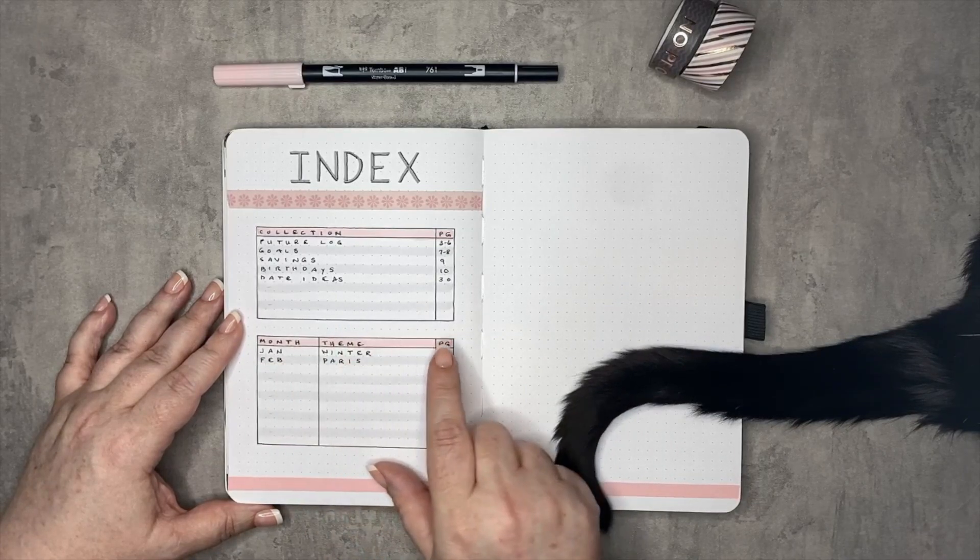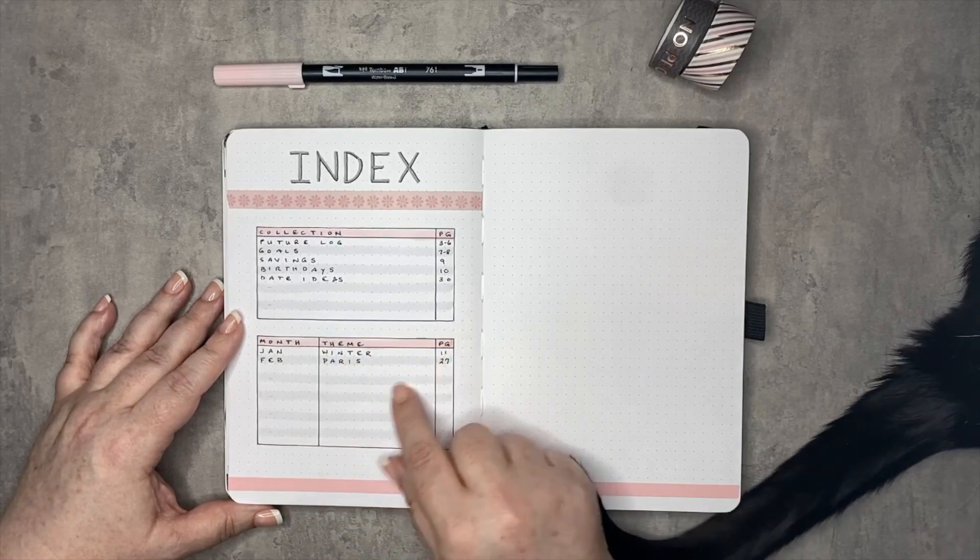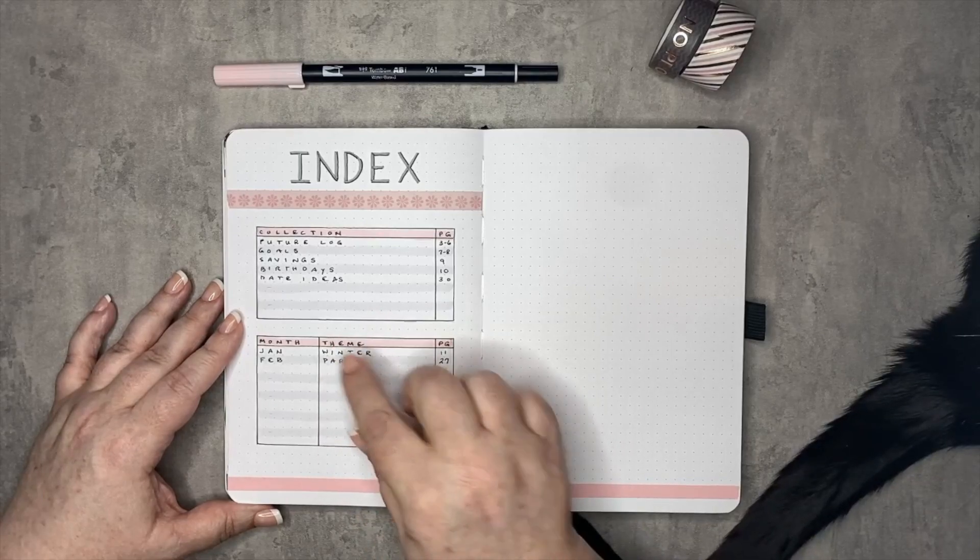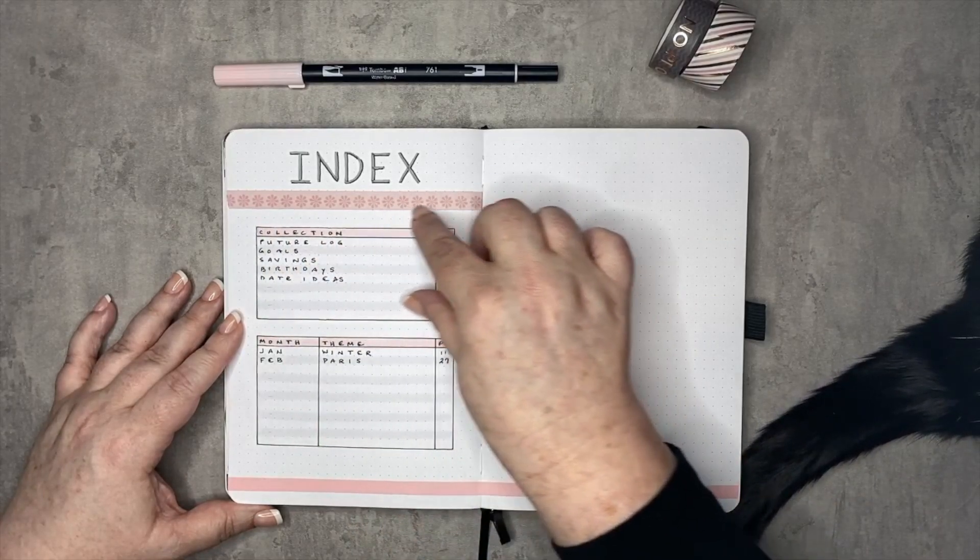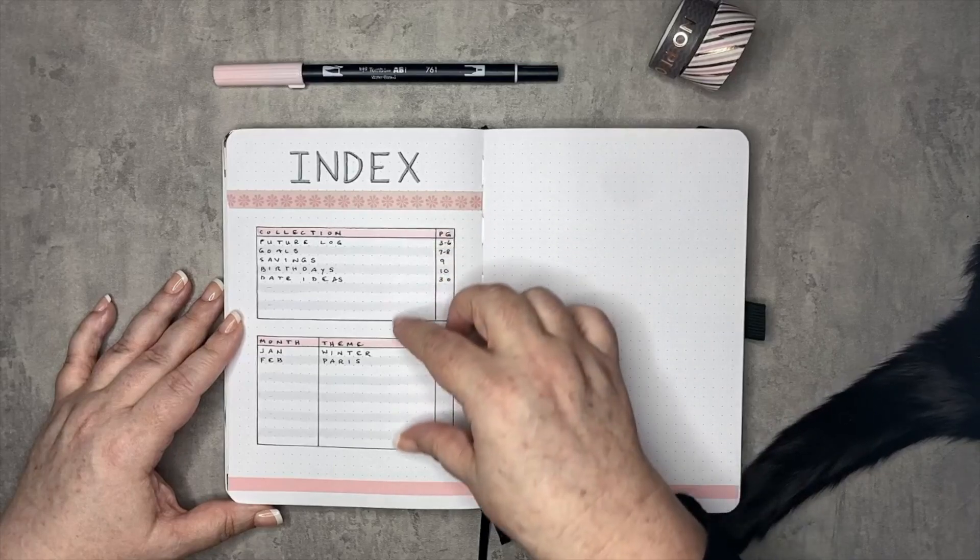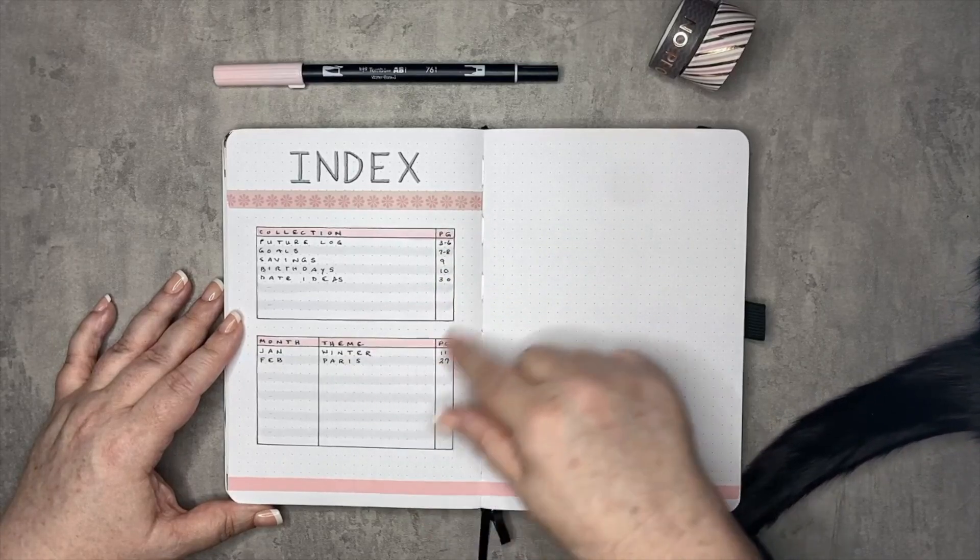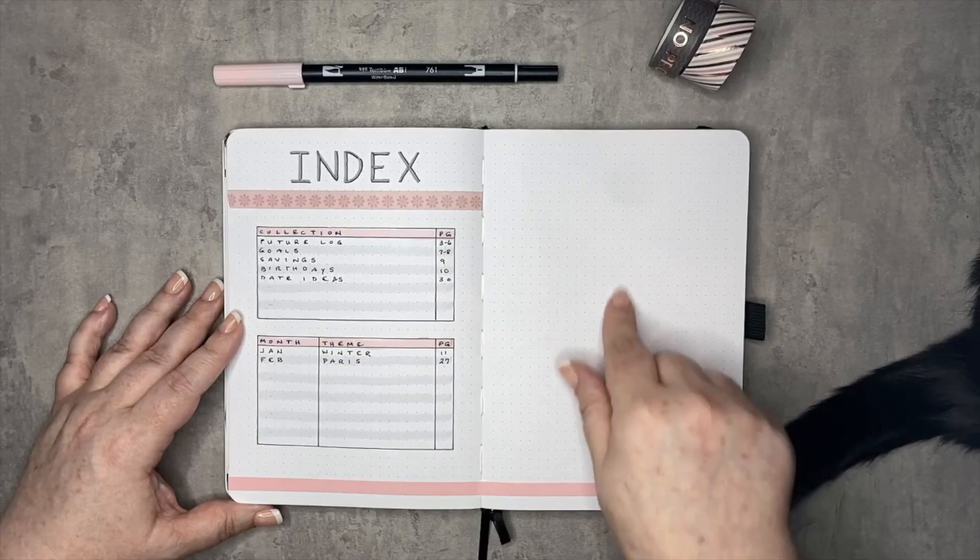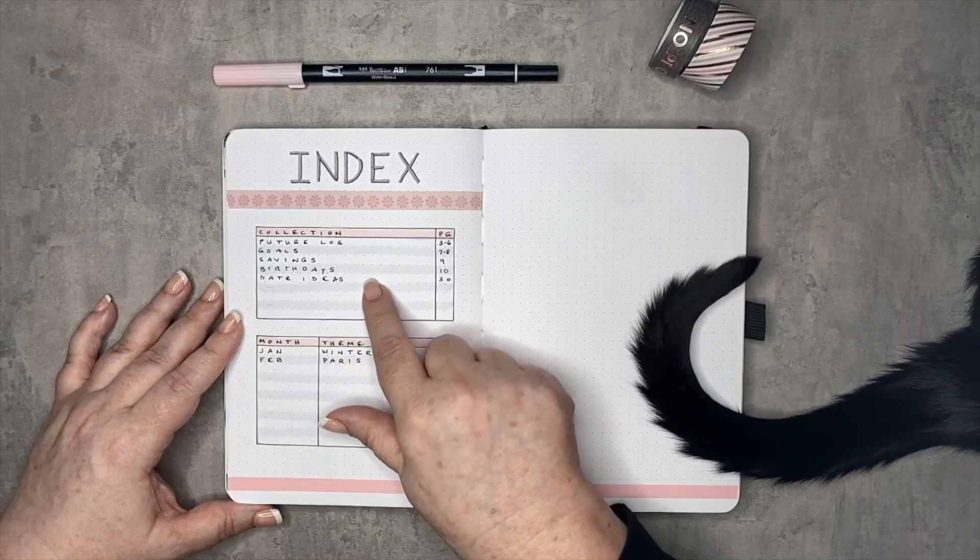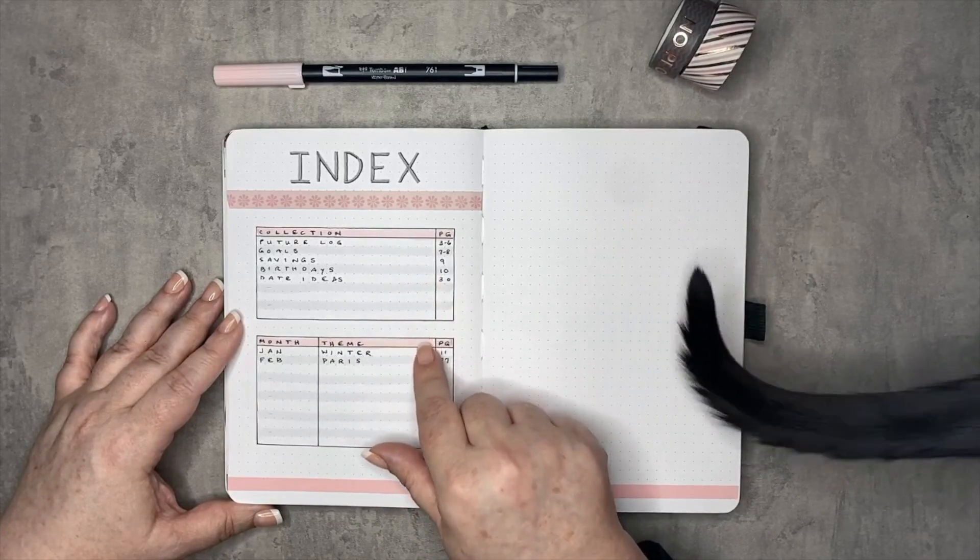February, a theme of Paris, and the page that it would start on. Now what you could do is flip these two boxes around so that you have your 12 rows for your months and then put the collections below it in case they need to flow to the next page and keep the next page open if you needed more space than this for the collections.